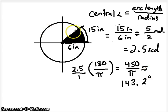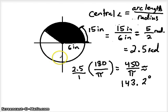So really, this picture isn't quite accurate. 143 degrees would be a little bit farther over here. So 6-inch radius with a 15-inch intercepted arc gives us approximately 2.5 radians for the central angle measurement, or in degrees about 143 degrees. So that's how we find the measurement of the central angle if we're given the arc length and the radius.